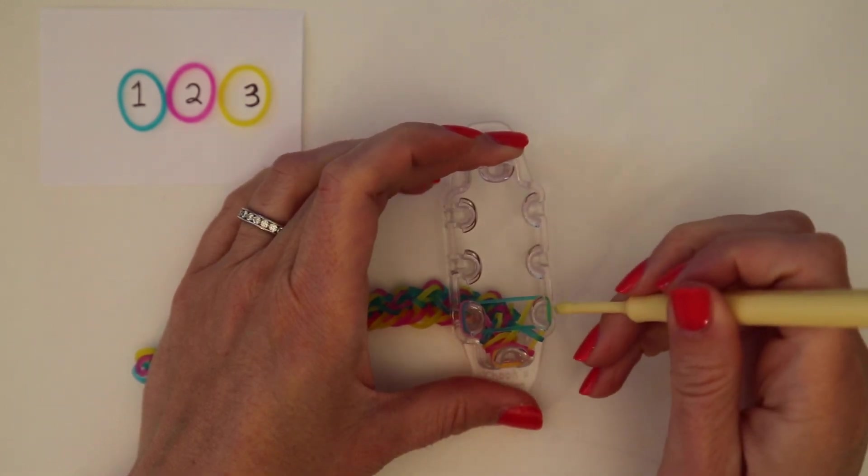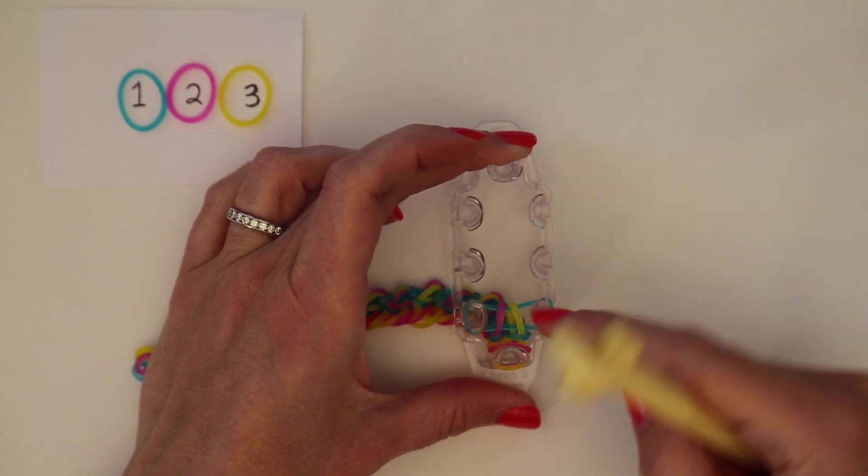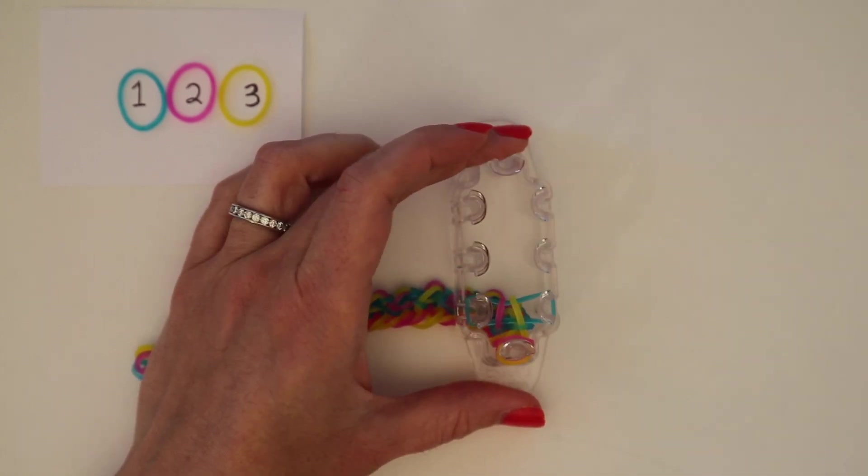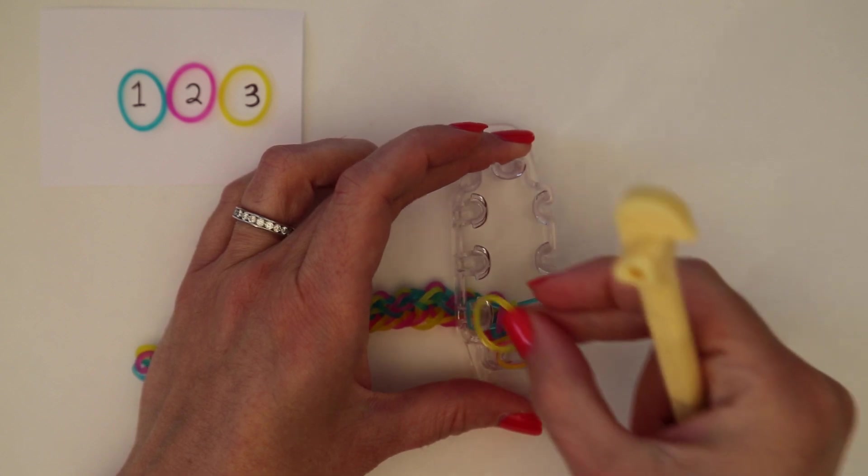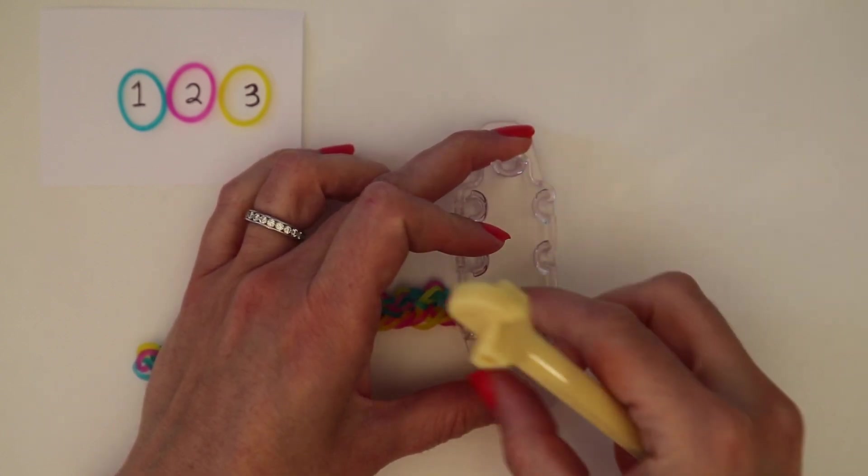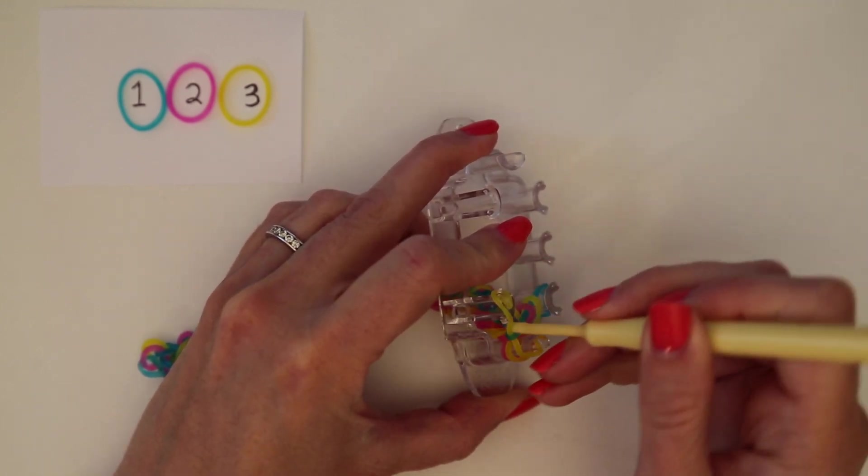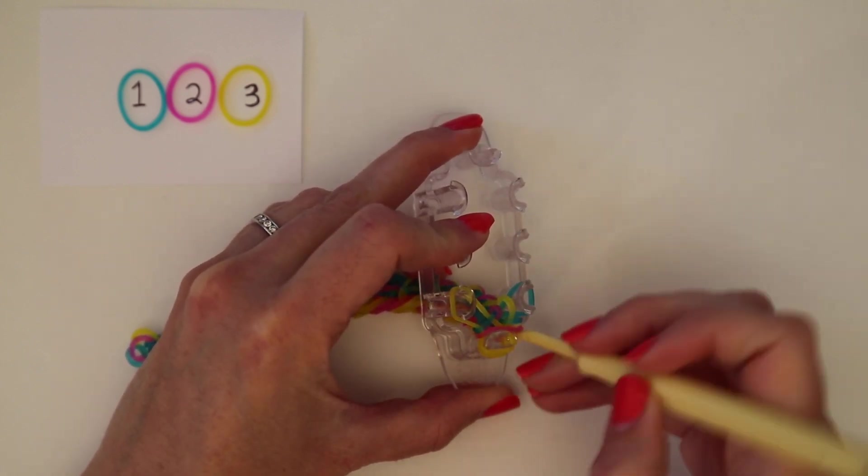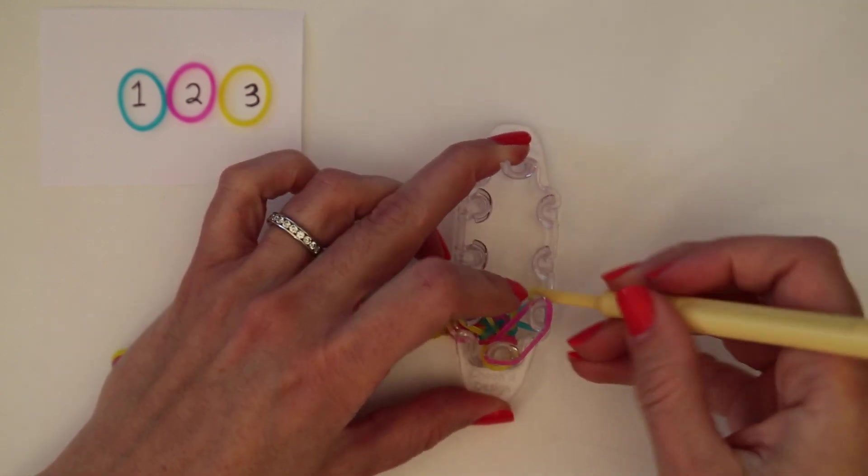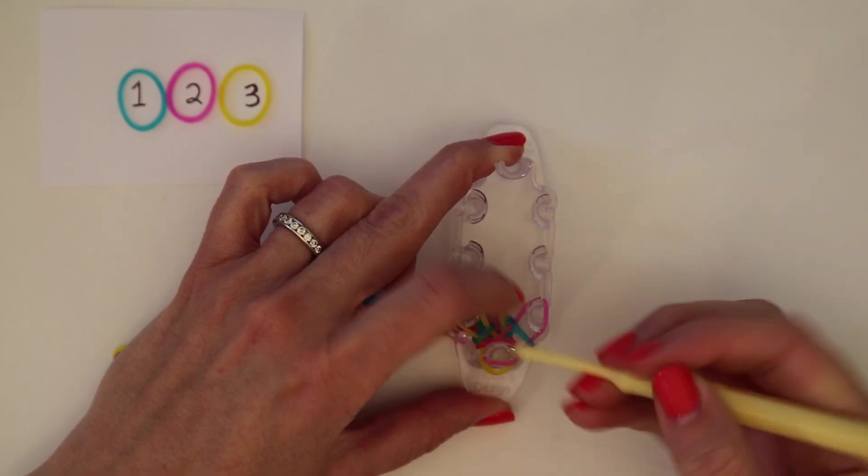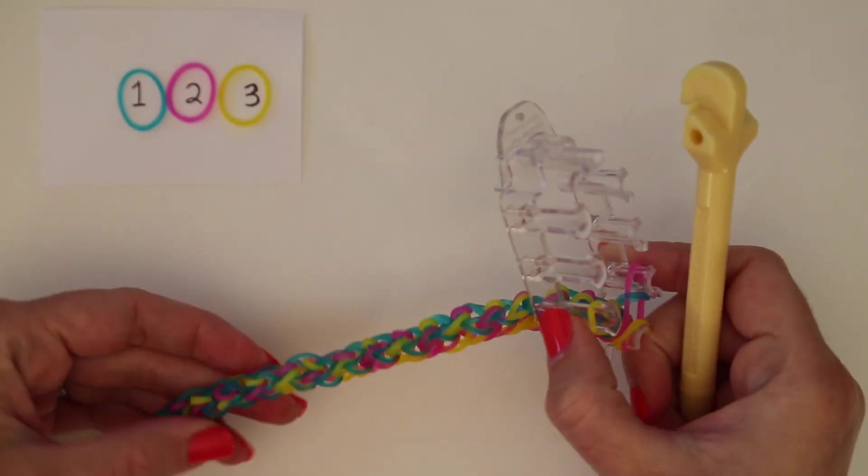And by the magic of YouTube my bracelet has gotten much longer and I'm just repeating over and over again the same pattern keeping color one going across the two back and then alternating my colors two and three on the left and right sides, and you just keep going until the bracelet is whatever length you want it to be to wear.